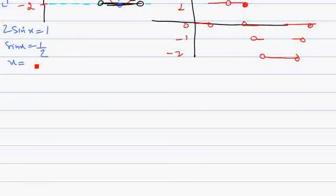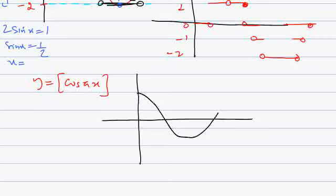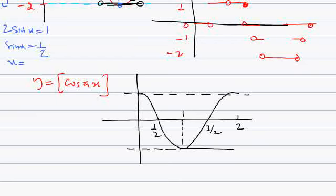As another example, suppose we need to draw the graph of y = greatest integer of cos(πx). We draw the graph of cos(πx), mark the points of intersection with the horizontal integer lines, and between two horizontal lines, map the graph onto the y = k line below. The red part shows the resulting graph of greatest integer of cos(πx). Work through this quickly — if it takes too long, the steps lose their usefulness.